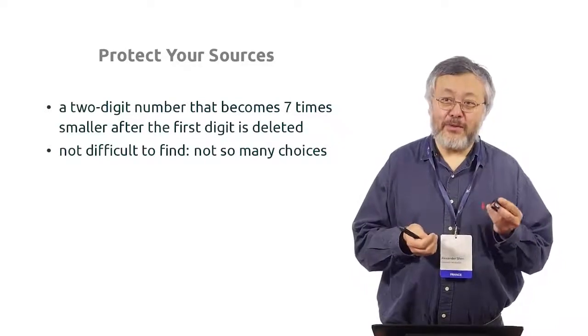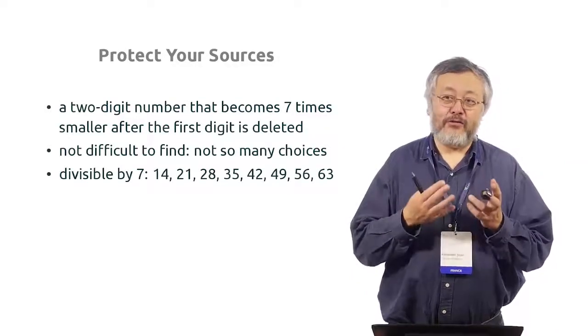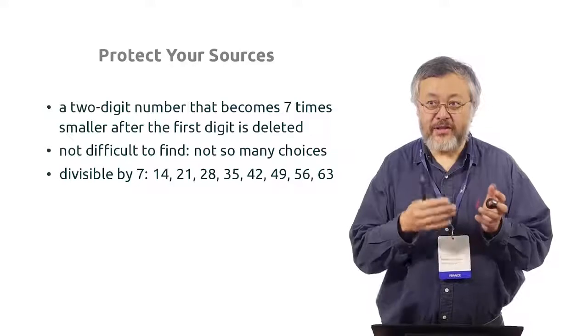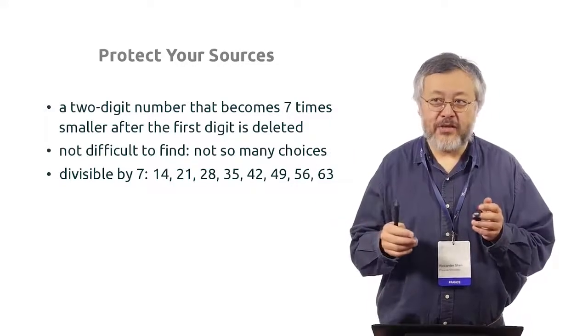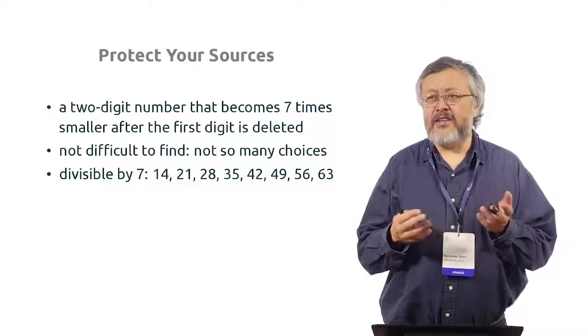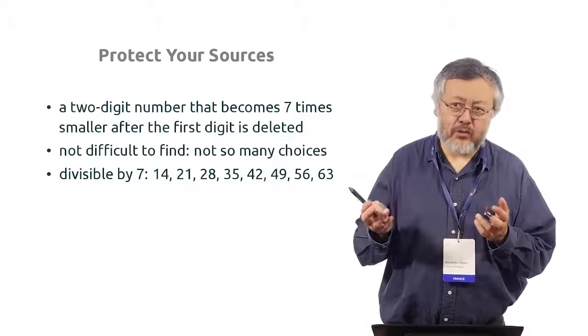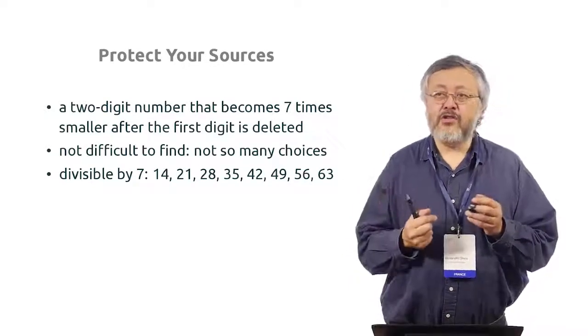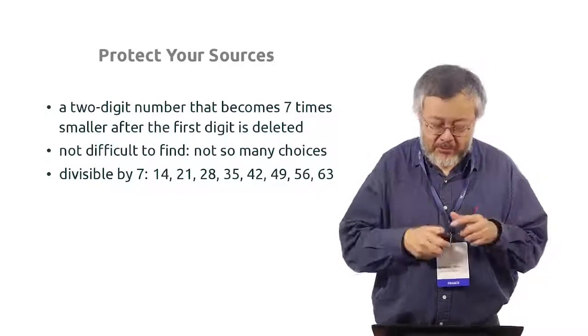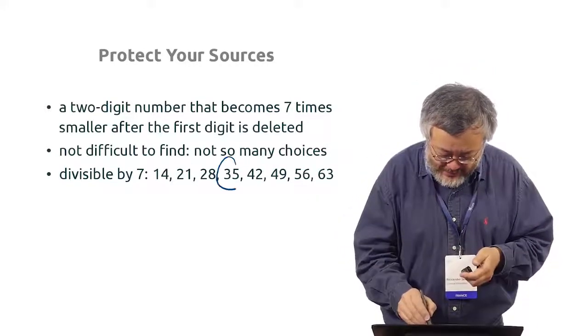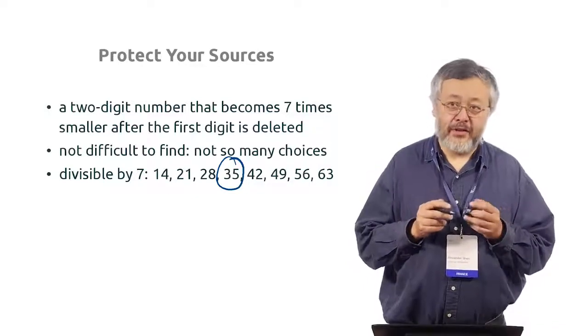If you remember the multiplication table, the first two-digit number is 14, then 21, and then you get 63 and the next one is 70, and then the division by 7 gives 10, which is not one digit. So it's simply a small list and you can check that 35 is the only thing.